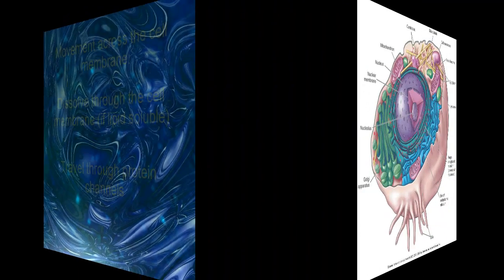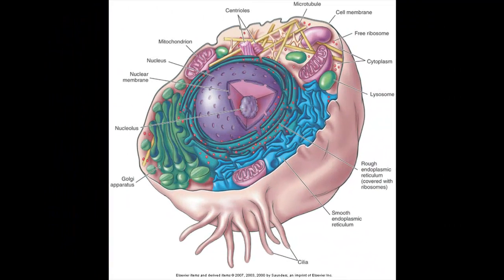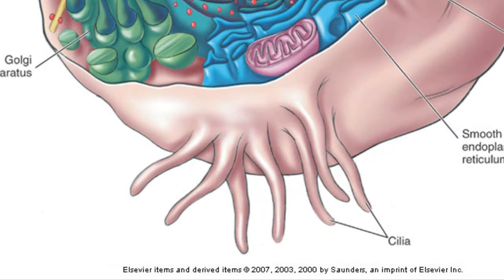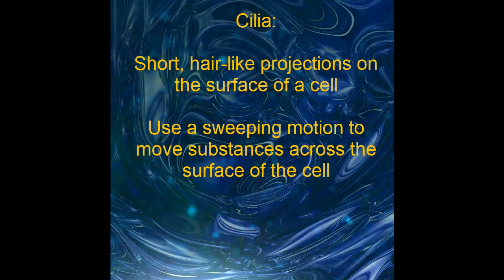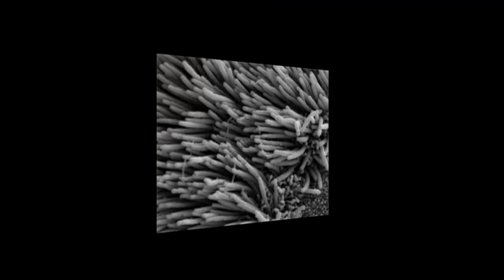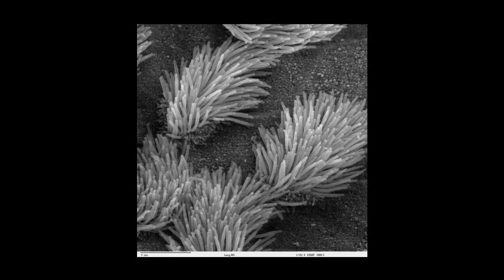Still on the outside of the cell — two structures you may or may not find there. The first one is cilia: short little hair-like projections. Cilia kind of look like a crew cut on the outside of the cell, or like the anemone that Nemo lives in in Finding Nemo — they do this wave-like motion. And with that wave-like motion, they sweep things across the surface of the cell. You usually see ciliated cells in places like the respiratory tract or the digestive tract, where things need to be swept across the surface.